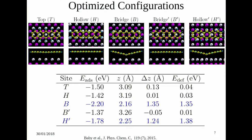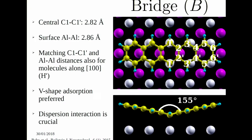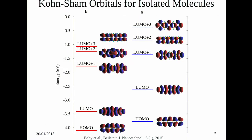The interesting finding is that at the bridge site the molecule is bent into a V-shape, and the same result is obtained for hollow-dash with an apparent delta-Z — a height difference between the central and edge carbon atom of around 1.35 Å. The most stable site remains the bridge site. This bending is caused by the matching distance between the central carbon atoms C1 and C1-dash, around 2.82 Å, matching the two aluminum atoms directly below. This pushes the molecule to deform and bond in a V-shape with an angle of around 155°. Without including Van der Waals, this result was not obtained, so dispersion interactions are really important in such systems.